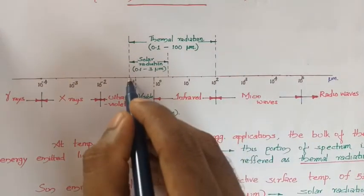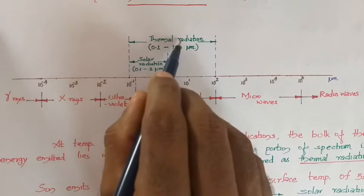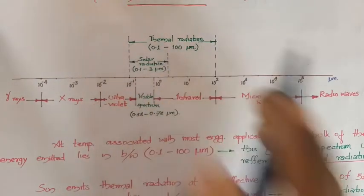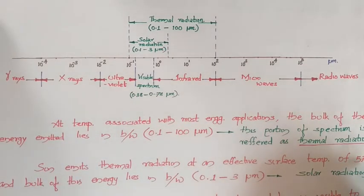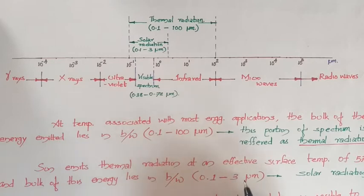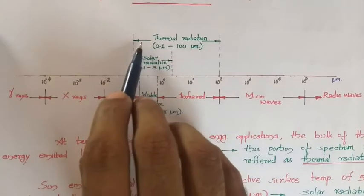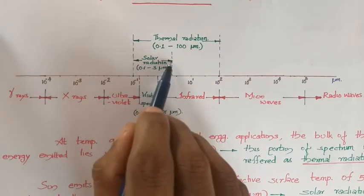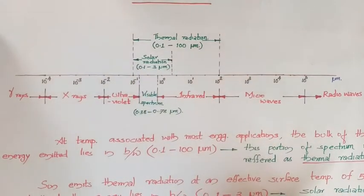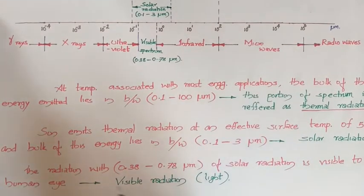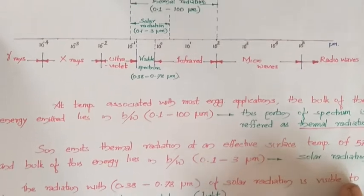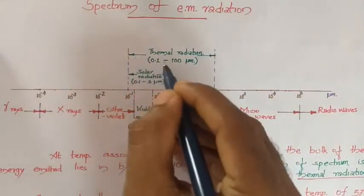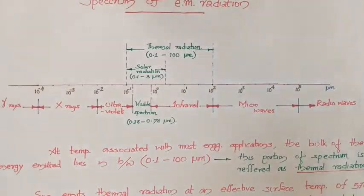This 0.1 to 100 micrometer region is called thermal radiation, as most bodies emit waves in this region. Out of this, the sun — with an average temperature of approximately 5760 Kelvin — emits energy predominantly in the 0.1 to 3 micrometer range, known as solar radiation. Within this solar radiation range, the portion from 0.38 to 0.78 micrometers is visible to the human eye and is called visible radiation.